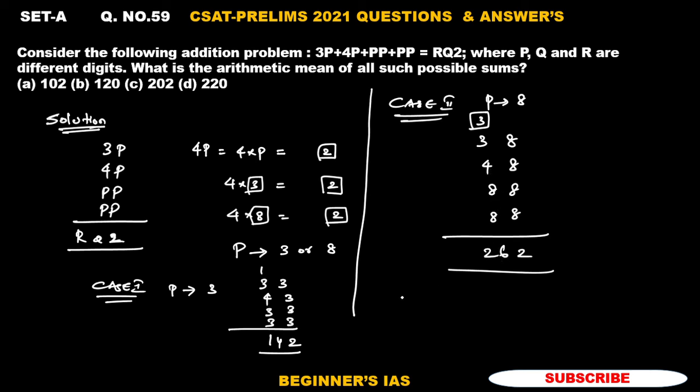This is another possible sum. Now we can able to identify what is the value of R and Q. Now it is given that RQ is equal to 2. RQ2 which means that R is equal to 1, Q is equal to 4. Now in this case R is equal to 2, Q is equal to 6. But we